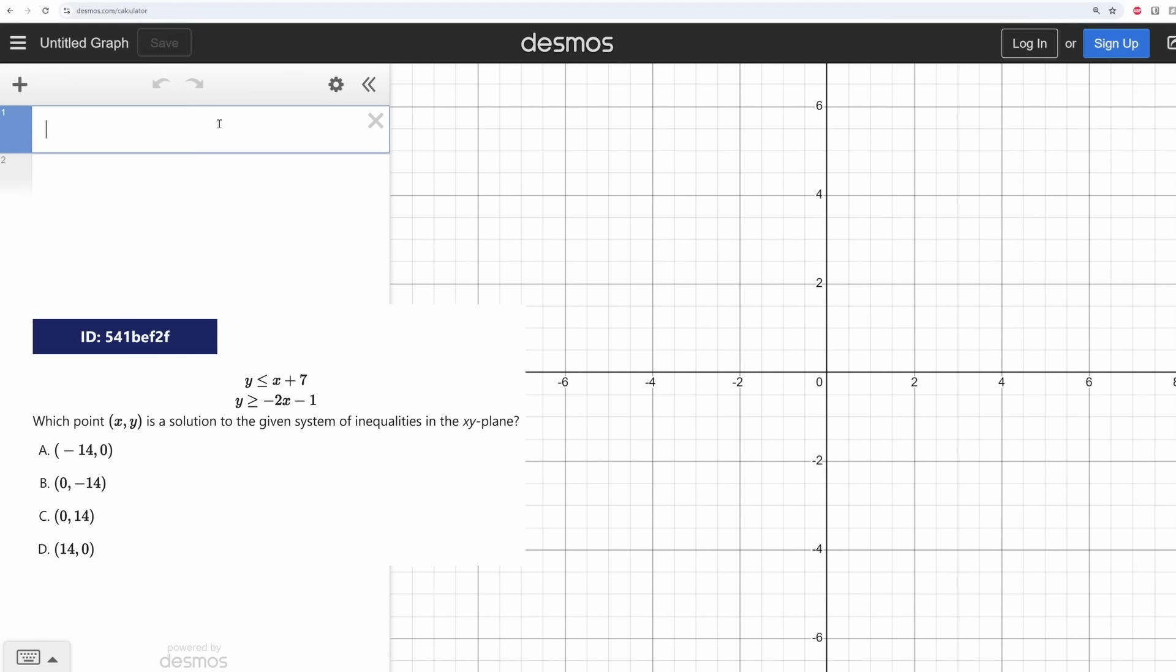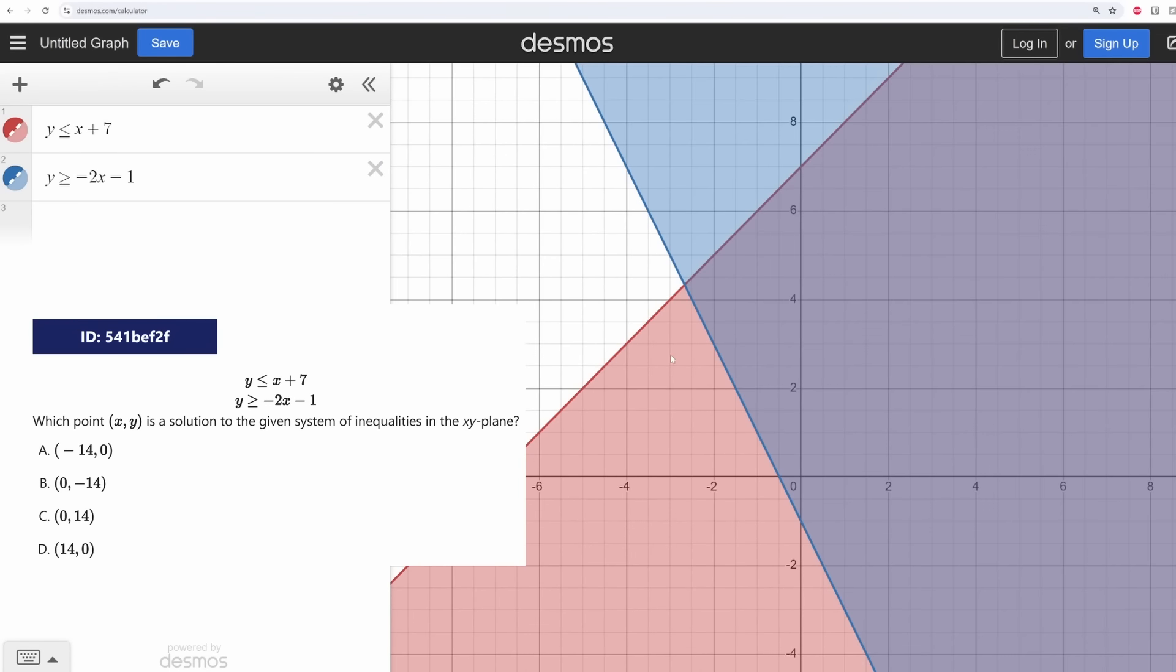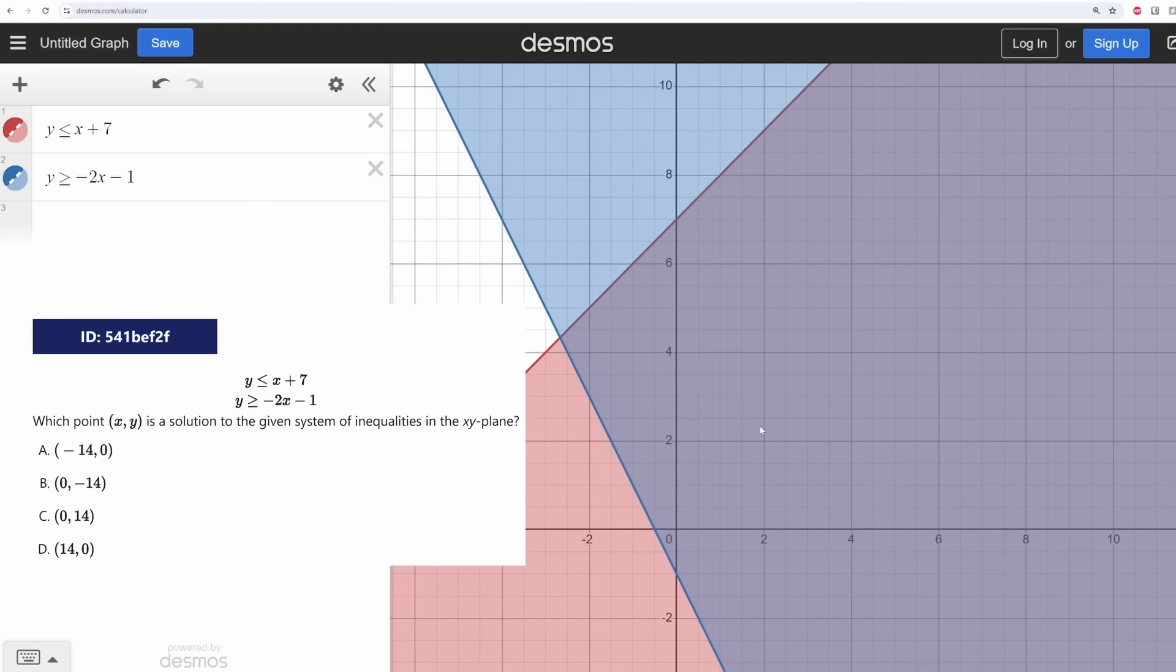Just like systems of equations, you can solve systems of inequalities just by plugging them straight into Desmos. Desmos will shade the regions that satisfy each inequality. So for a problem like this, where you're trying to find a solution, you don't need to look for the point of intersection, but rather any point where the red and blue regions overlap. In that case, this would be 14-0.